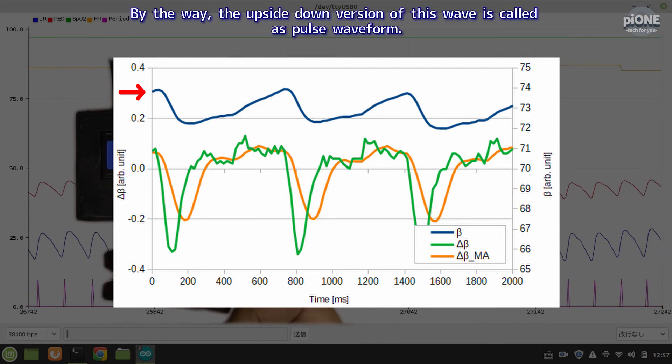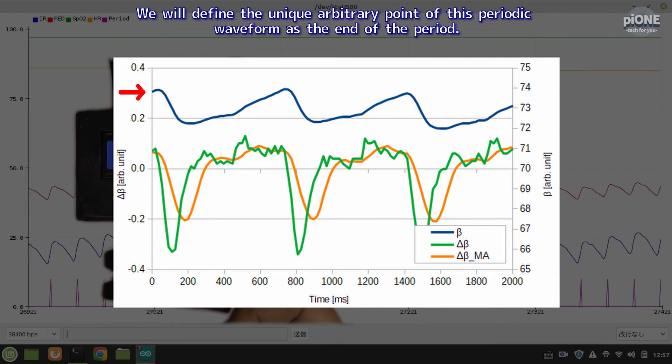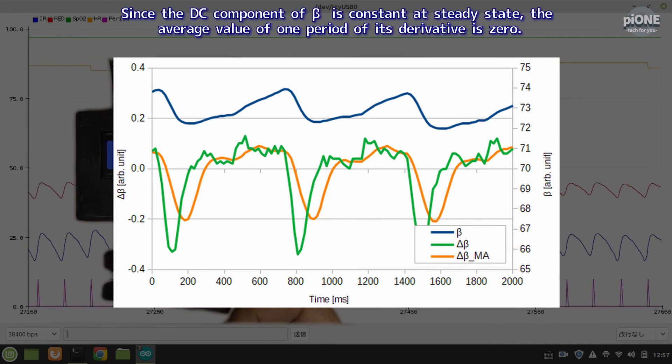By the way, the upside-down version of this wave is called as pulse waveform. We will define the unique arbitrary point of this periodic waveform as the end of the period. Since the DC component of beta is constant as steady state, the average value of one period of its derivative is zero.